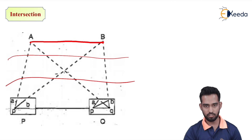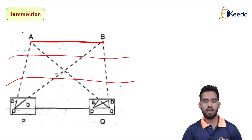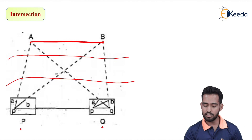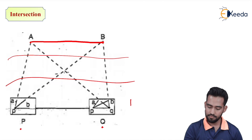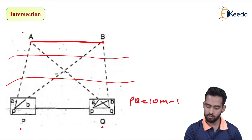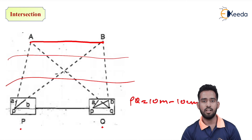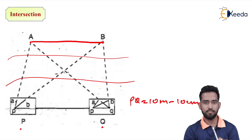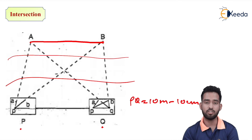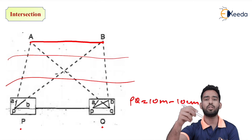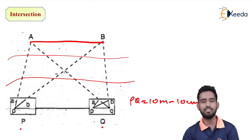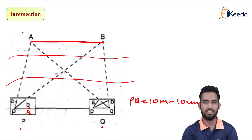First, we establish two station points P and Q which are accessible to each other. Calculate the distance between P and Q and convert it into scale. Say PQ equals 10 meters, which converts to 10 centimeters on the sheet. First, set up the plane table over station P, do all the temporary adjustments using the U-Frame, and plot point P on the sheet. Then, by sighting the ranging rod at Q, draw a ray towards Q. Mark point Q on the sheet to get baseline PQ. From P, by sighting object A, draw a ray towards it, and from P, sighting object B, draw a ray towards it.